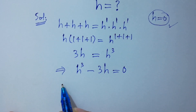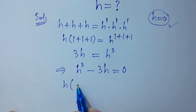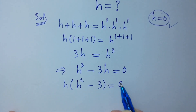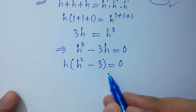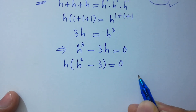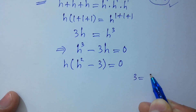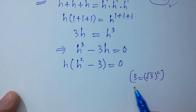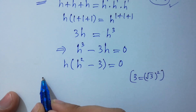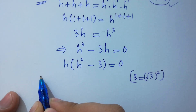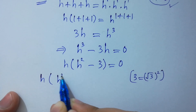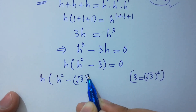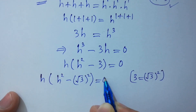Taking h common: h times (h squared minus 3) equal to 0. Since 3 equals the square of square root of 3, this can be written as h times (h squared minus square root of 3 squared) equal to 0.